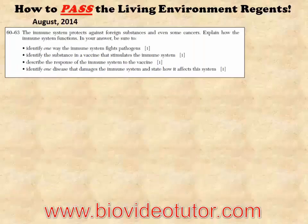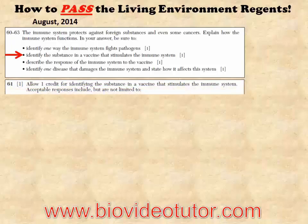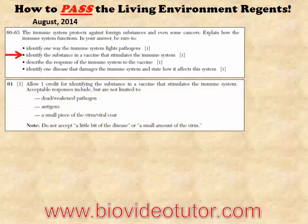August 2014, short answer question number 61: 'Identify the substance in a vaccine that stimulates the immune system.' By now you should know to write down a dead or weakened pathogen. Do not write 'a little bit of disease' or 'a small amount of the virus.'